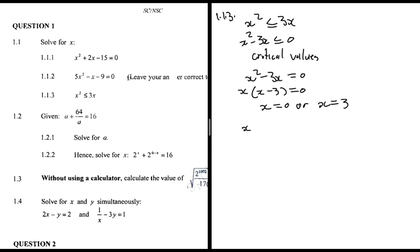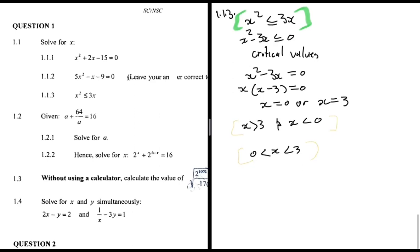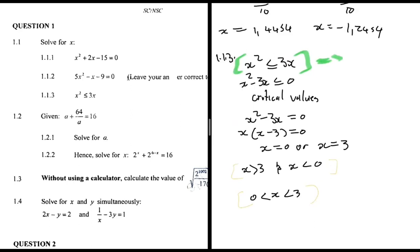With critical values 0 and 3, there are two possible solutions: x > 3 and x < 0, or x is between 0 and 3. To determine which is correct, I pick a number in the range between 0 and 3 — say 2. Substituting: 2² = 4, which should be ≤ 3×2 = 6. That's correct, so the solution is 0 ≤ x ≤ 3.